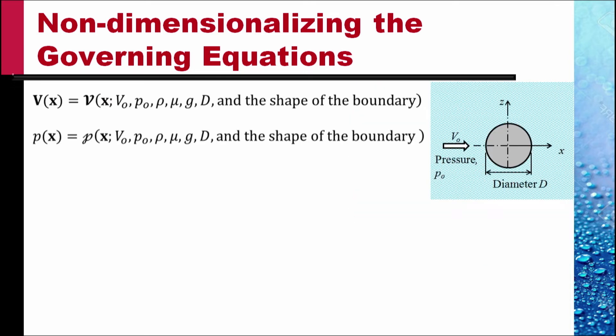Clearly, the vector velocity V would be a function of x, the location of the point in the flow field, and the list of parameters which include V naught (the velocity far upstream), P naught (the pressure far upstream), rho and mu (the properties of the fluid), g the acceleration due to gravity, and d the size of the cylinder measured by its diameter, and the shape of the boundary — in this case, cylindrical. Similarly, the dependent variable p, as a function of x, is again a function of the same set of governing parameters.